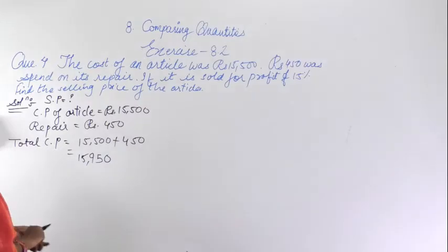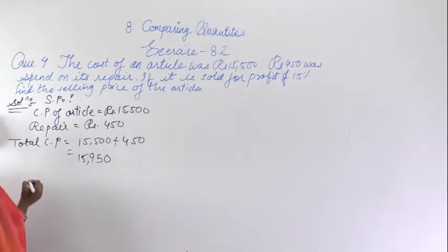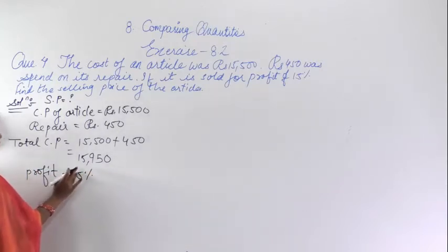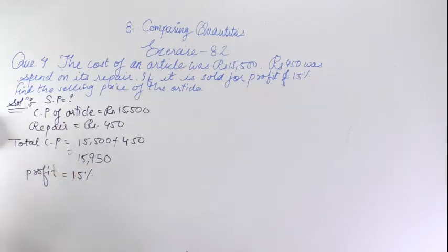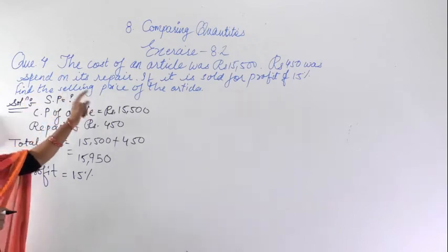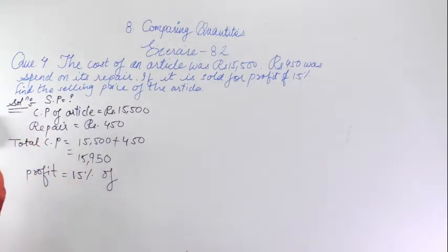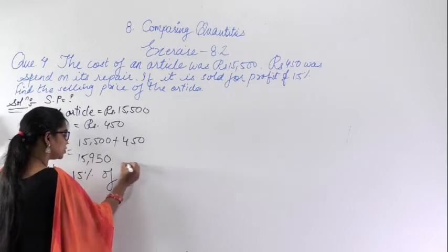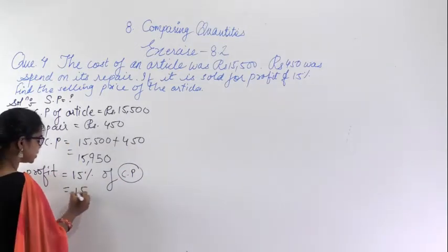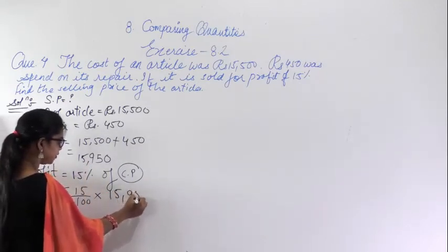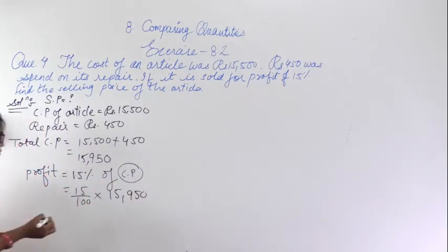It is given that if the article is sold, he gets a 15% profit. We need to find the selling price. So, 15% of the total cost price equals 15 upon 100 into 1,950. Cancel the zeros — this 0 and this 0 get cancelled — leaving 15 into 195 divided by 10.